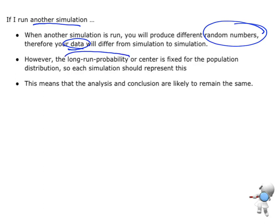But that long-run probability or the center, we should be getting values in our simulation that are representative of the true population values. So it means that in our analysis and conclusion, we're likely to have similar results and similar estimates as what we get in this particular one.